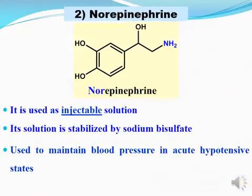تاني ممبر من الـ non-selective alpha-beta agonist اللي هو النور-أبنيفرن. نور يعني no R - هو catechol isanol with primary amine. ده برضو نفس الكلام اللي قلناه على الأبنيفرن: الـ catechol moiety بيتأكسد easily oxidized in solutions إلى quinone red اللي عبارة عن red pigment. Zero solutions are stabilized بإضافة reducing agent زي sodium bisulfite أو ascorbic acid. برضو ما بيتاخدش oral وبيتاخد injection لأنه برضو metabolized في GIT and liver.